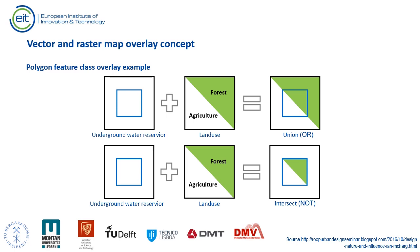Map overlay analysis can be performed using either a vector or raster data approach. In the vector data approach, we overlay vector feature classes and, depending on the type of function used, obtain different results. For example, the intersect function produces the geometric intersection of two input feature classes — features or portions that are spatially congruent in all inputs will be stored in the output. The union function produces a vector feature class containing features representing the geometric union of all inputs, as well as all attribute fields from the input feature classes.